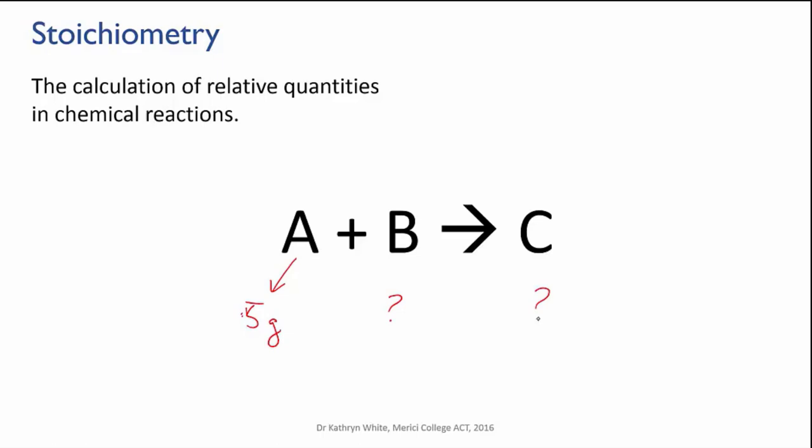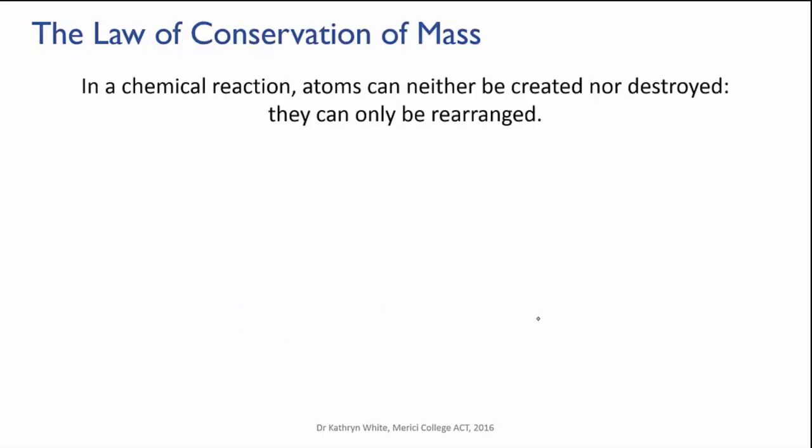Before we get into how this is done, I have to remind you that all of this is based on the law of conservation of mass, that matter cannot be created or destroyed. In a chemical reaction, we cannot create or destroy atoms, we can only rearrange them. So whatever atoms you start off with, you must end up with exactly those atoms, no more and no less.